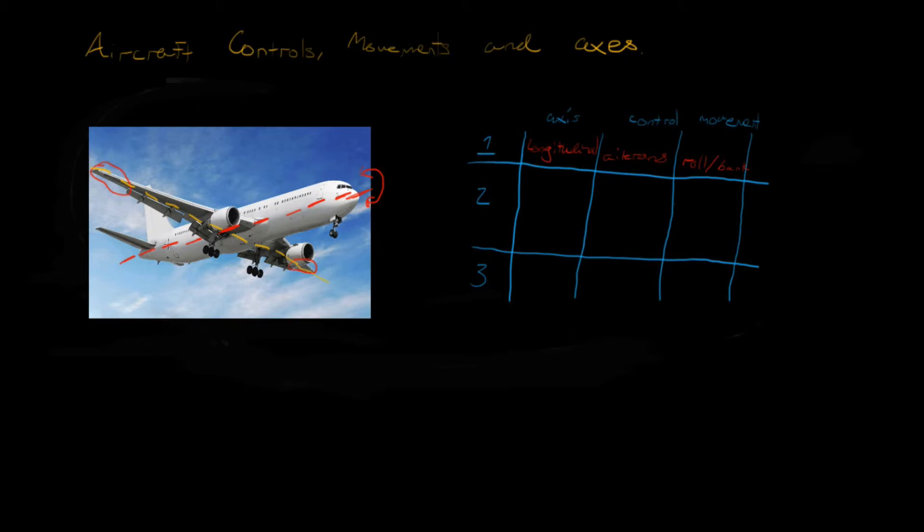And the way to remember the difference between the longitudinal axis and the lateral axis, for me, is to usually think that a plane is longer than its wingspan. Which is not always the case, don't kid me wrong, but that's how I like to remember it.